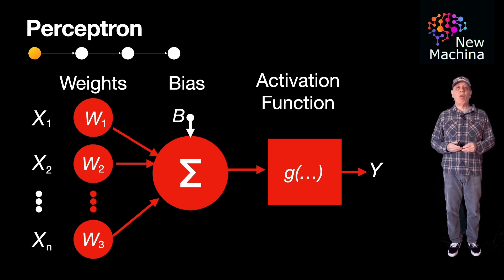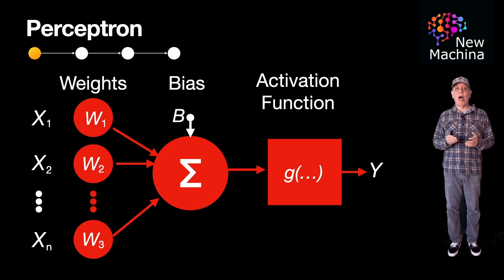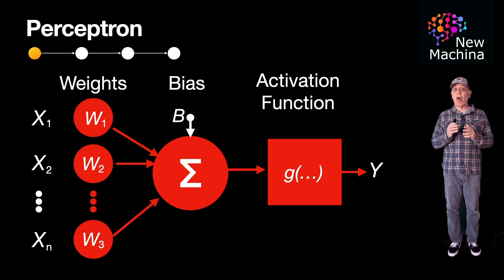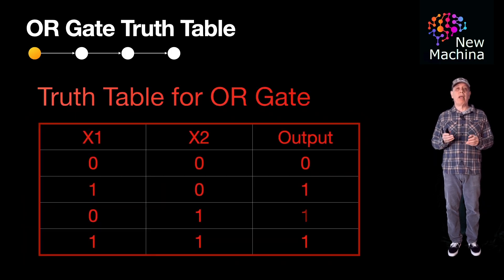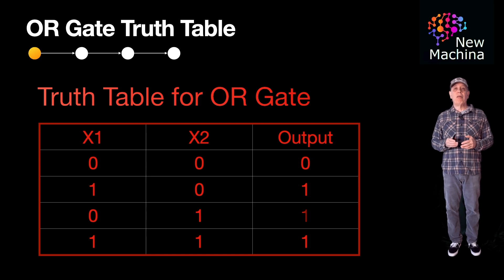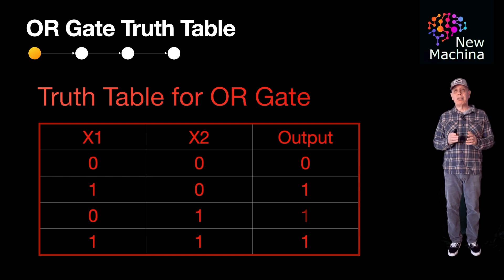In this example, we'll build an OR gate using the Perceptron model implemented using PyTorch, which is an open-source, Python-based machine learning library. Here's a truth table for an OR gate. You can see to implement an OR gate, if either one or both inputs are one, then the output is one. Otherwise, the output is zero.